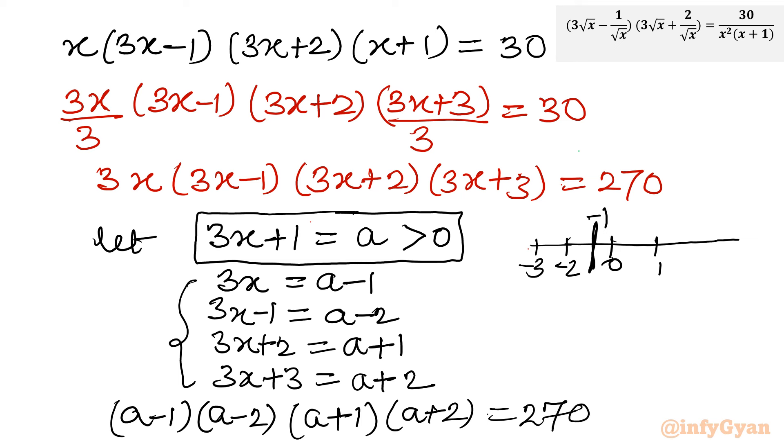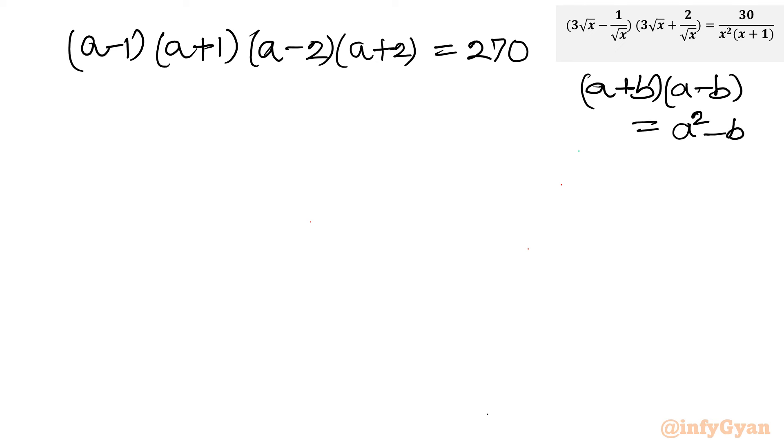Now it is looking comfortable. a-1, a+1 is there; a-2, a+2 is there. So let us apply the difference of two squares formula. I will write (a-1)(a+1)(a-2)(a+2) = 270. We know that (a+b)(a-b) equals the difference of two squares. So here I will write (a²-1)(a²-4) = 270.